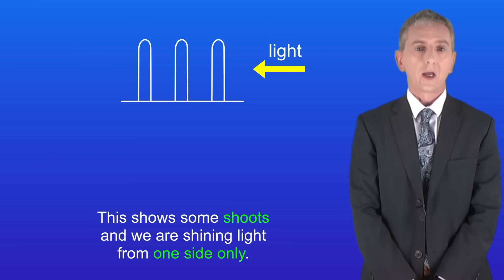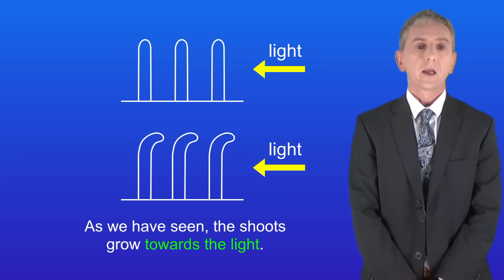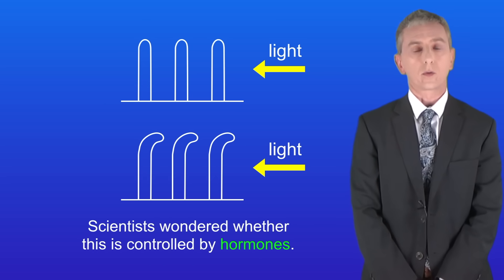So I'm showing you here some shoots and we're shining light from one side only. As we've seen, the shoots grow towards the light. Scientists wondered whether this is controlled by hormones.